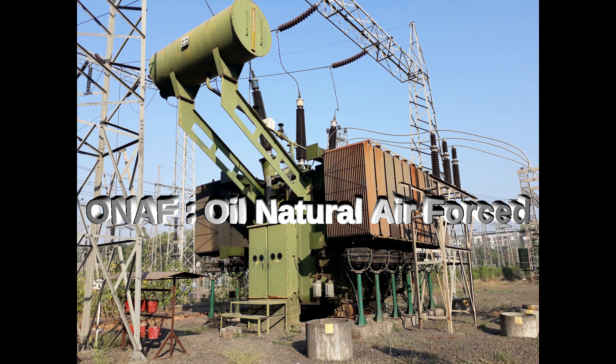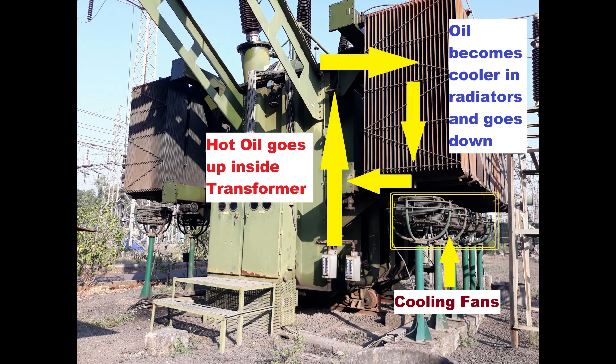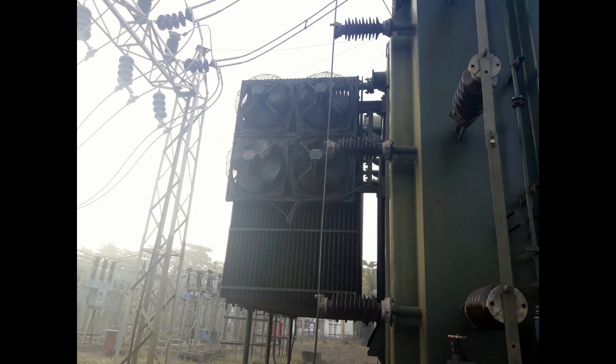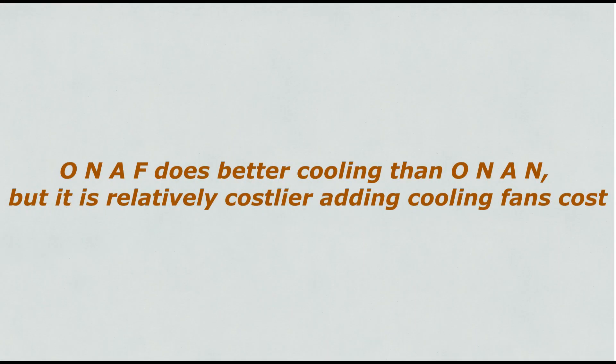ONAF — meaning oil natural air forced. This cooling system works the same as ONAN, except in this case airflow is forced with cooling fans. Cooling fans are normally fitted at the bottom of radiators facing upward. The reason is that air at the bottom is relatively cooler, so fans at the bottom forcing air from bottom to top will give more effective cooling. Cooling fans are fitted sideways also, suitable to the design. ONAF does better cooling than ONAN, but it is relatively costlier due to the added cooling fans cost.